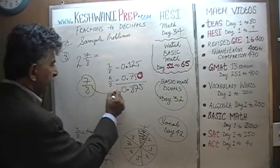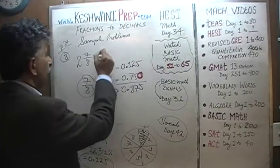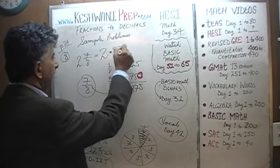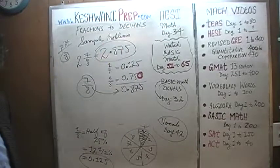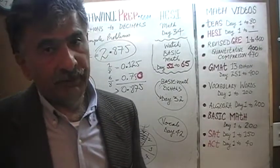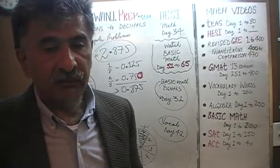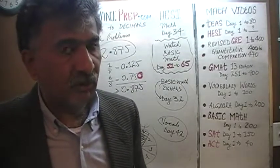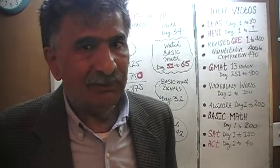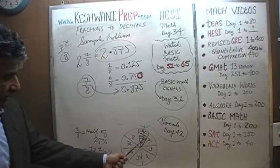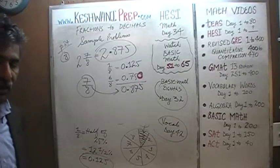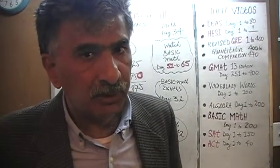So 7/8 is simply 0.875, and therefore 2 and 7/8 is 2.875 — that is your answer. Whether you're trying to figure out 7/8, 6/8, 5/8, or 3/8, you must know your eighths. The fundamental concept is the realization that one eighth is simply half of a quarter. Since a quarter is 25%, one eighth is 12.5%, which expressed as a decimal is 0.125.